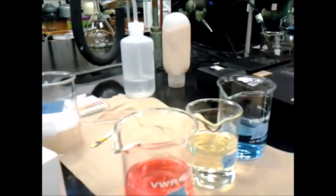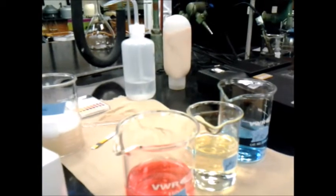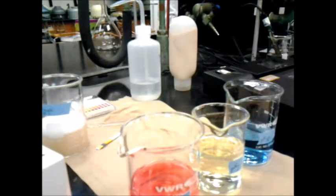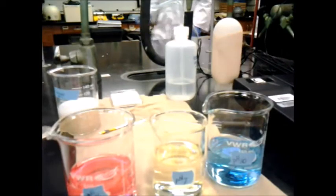And these are our buffer solutions. We have a 4, 7, and 10. These are what we call our controls or our standards. So in order to make sure that the machine is calibrated right, we're going to go ahead and actually calibrate the machine, and then we're going to do our own pH in our solution.